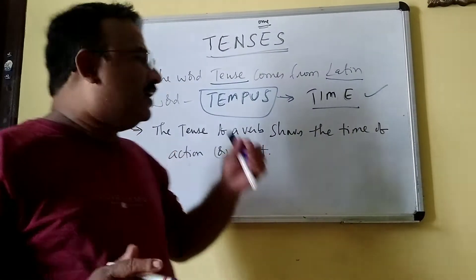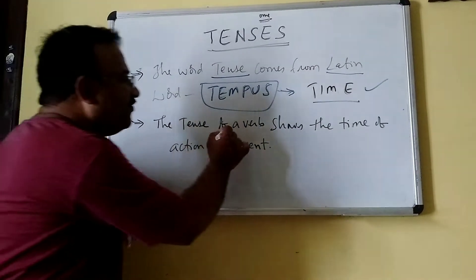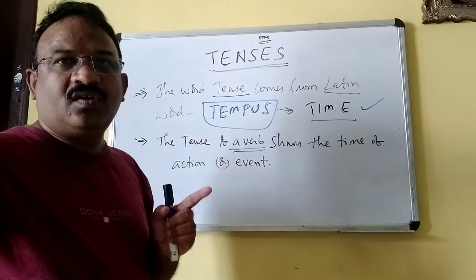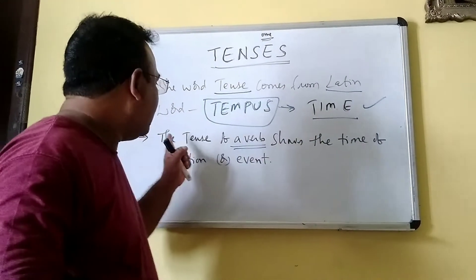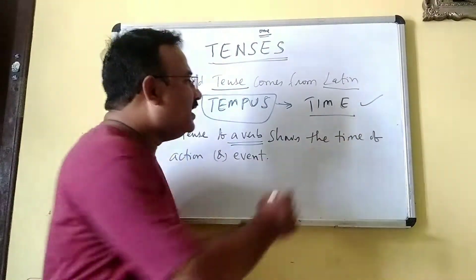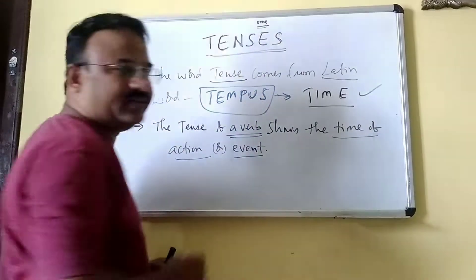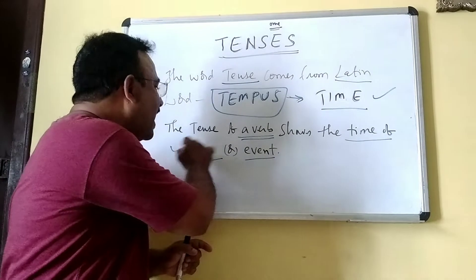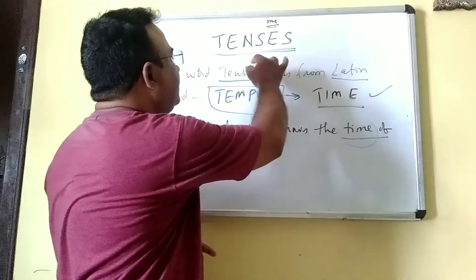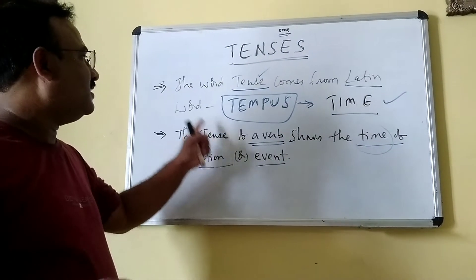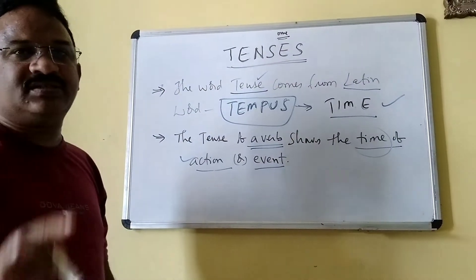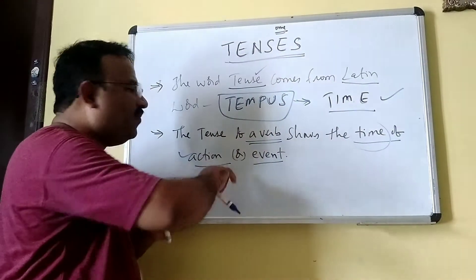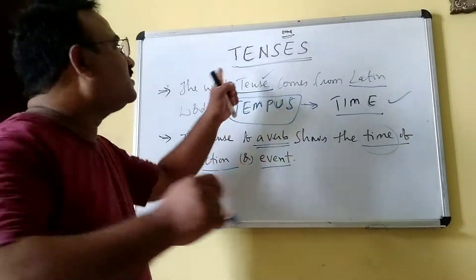The tense of a verb shows the time of action or event. Verb means action — the action of a noun or pronoun. So, the tense of a verb shows the time of action or event. Time means tense, and it comes from the Latin word tempus. Please remember: the tense of a verb shows the time of action or event. That is called tense.